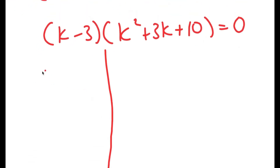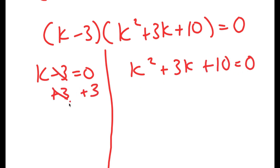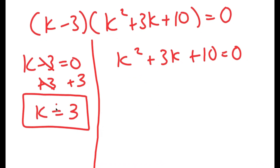Now I'm going to divide this into two different equations. I have k minus 3 equals 0, and k squared plus 3k plus 10 is equal to 0. For k minus 3 equals 0, I can add 3 on both sides, so I get k is equal to 3. This is one solution of k.